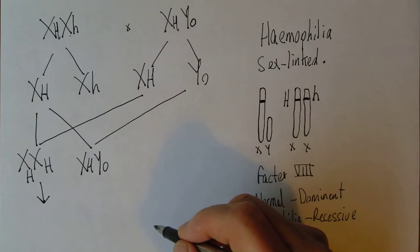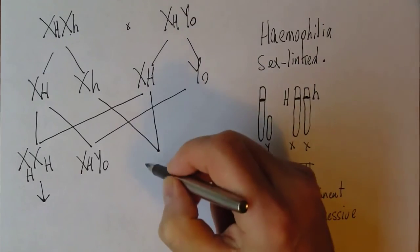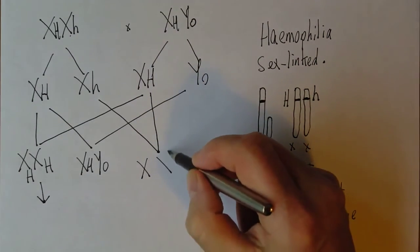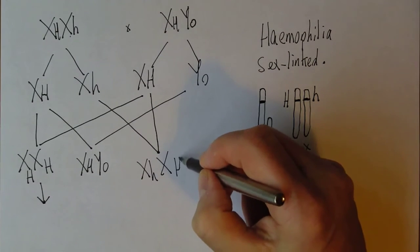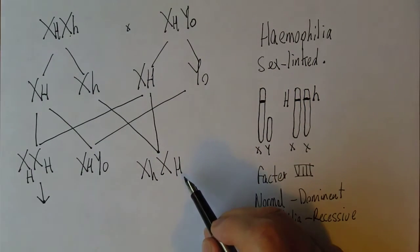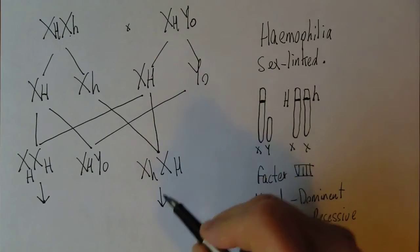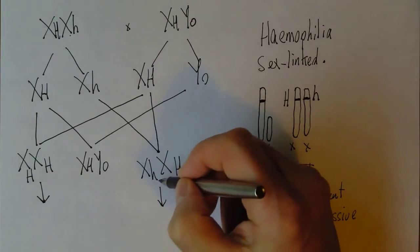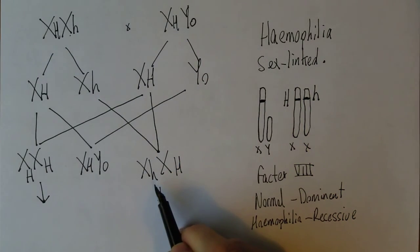Another possibility gives us a girl with X(h) and X(H). This girl is not going to suffer from haemophilia because she has one copy of the normal dominant gene, so phenotypically she'll be fine. However, she could potentially pass that defective haemophilia gene on to the next generation.